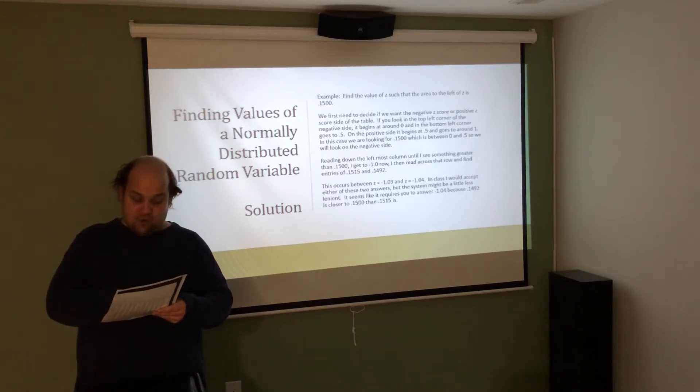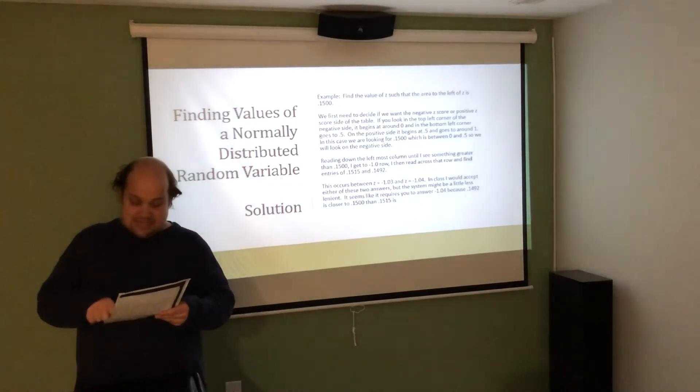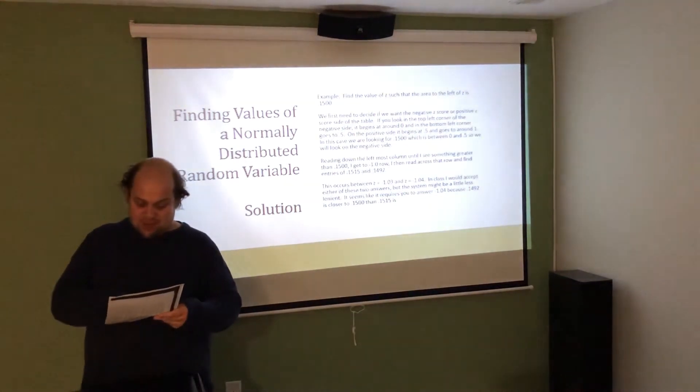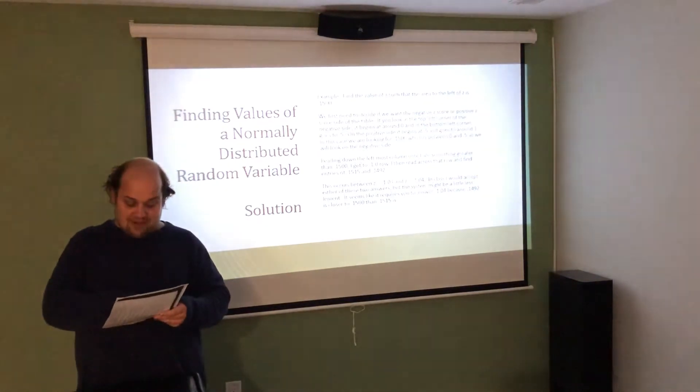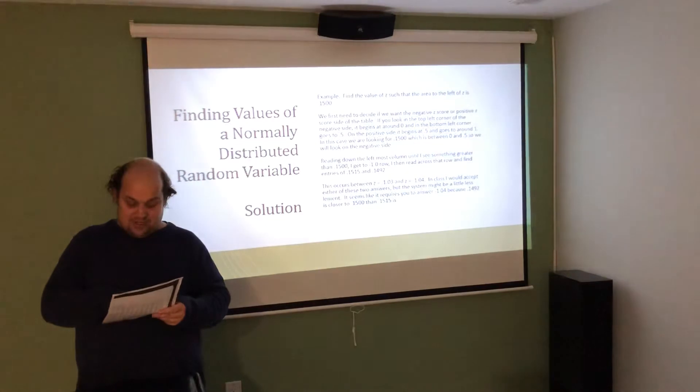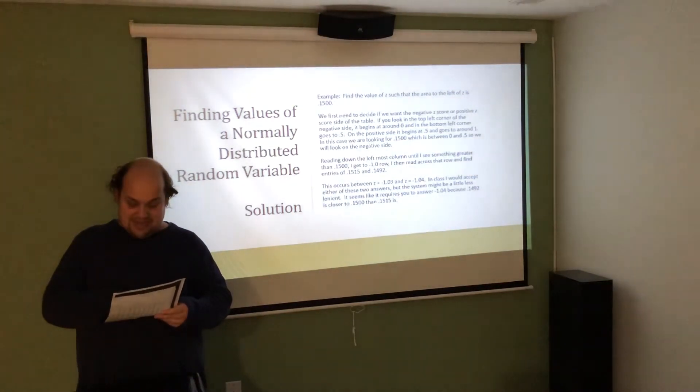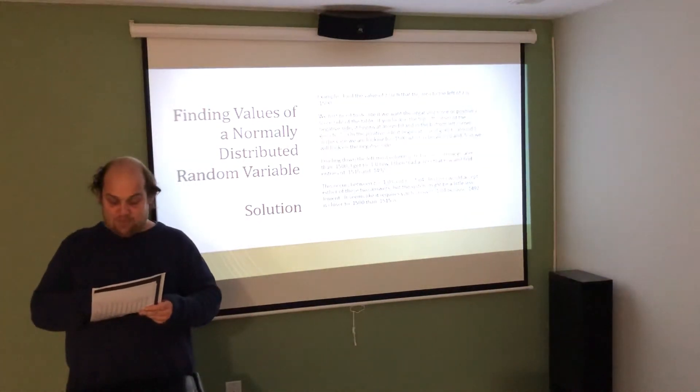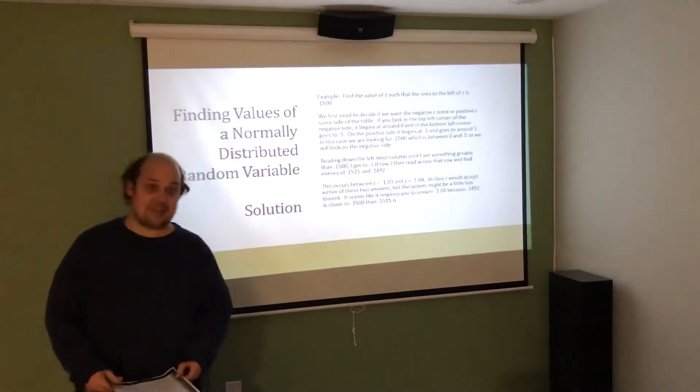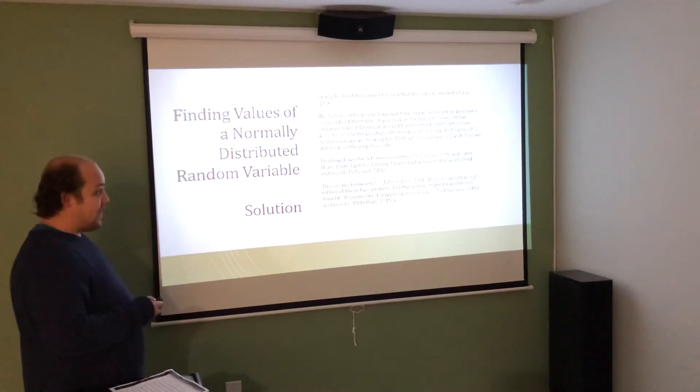In the row marked negative 1.1, as I read over, it's 0.1357, 0.1335, 0.1314. That's going too low, so let's go to the row below that, 0.1587, 0.1562, 0.1539, 0.1515, 0.1492. I see in the row marked negative 1.0. 1.02 is 0.1539. 1.03, negative is 0.1515, and negative 1.04 is 0.1492. So really what that tells me is between these two is where it's happening. In class, I'd accept either negative 1.03 or negative 1.04.